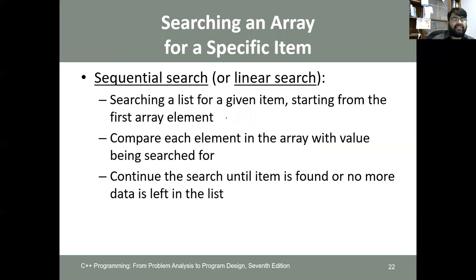Searching an array for a specific item is usually done using the linear search method, also called sequential search. We start from the first element and compare each element with the value we are searching for, continuing until either the item is found or we run out of data in the list.